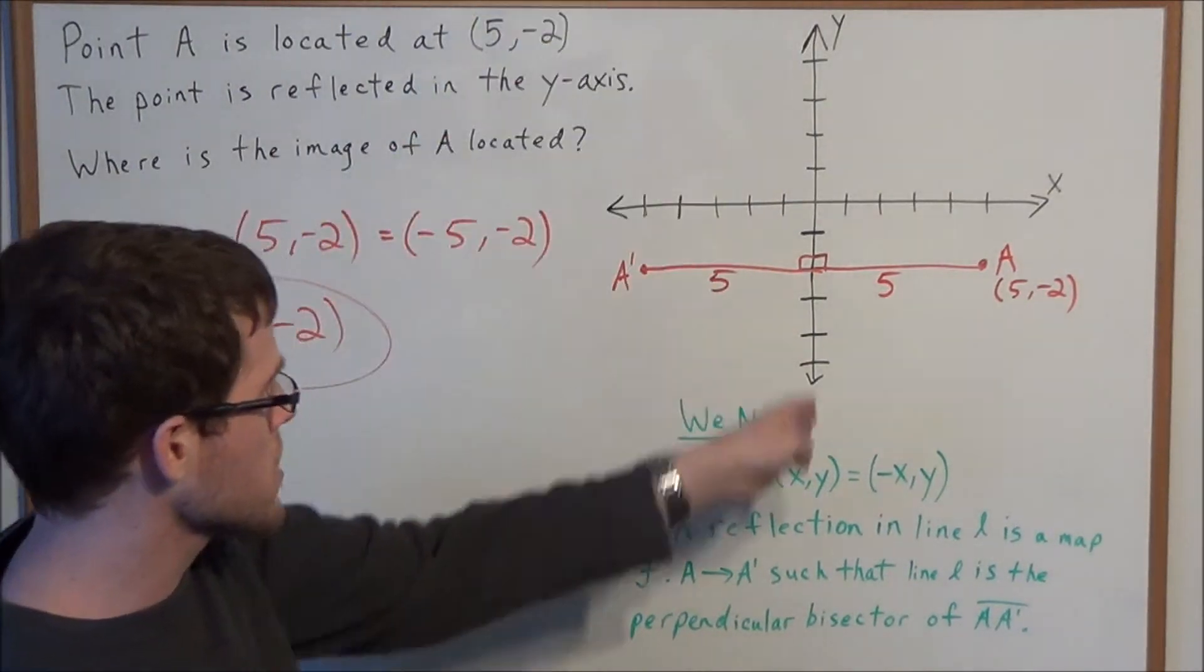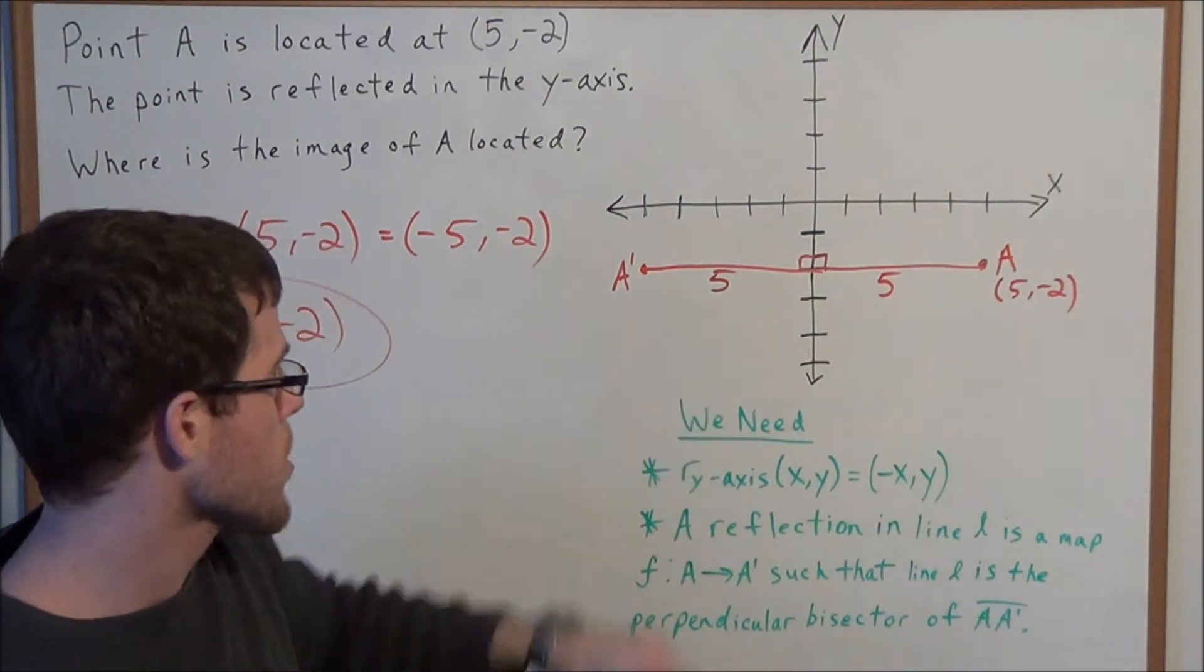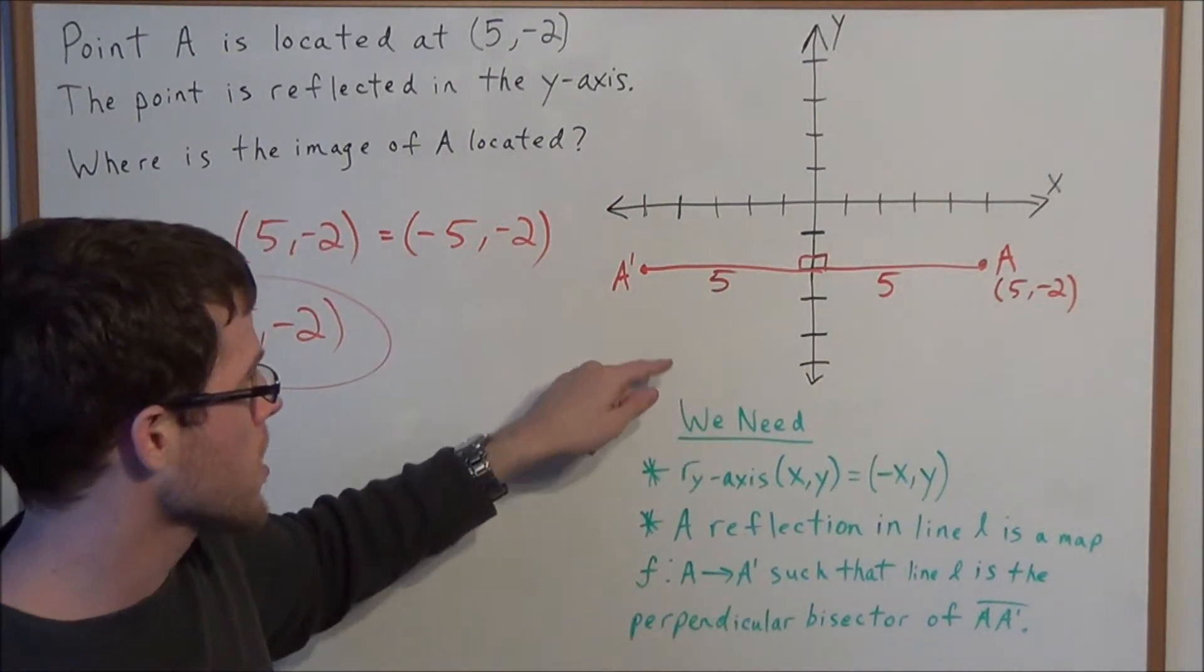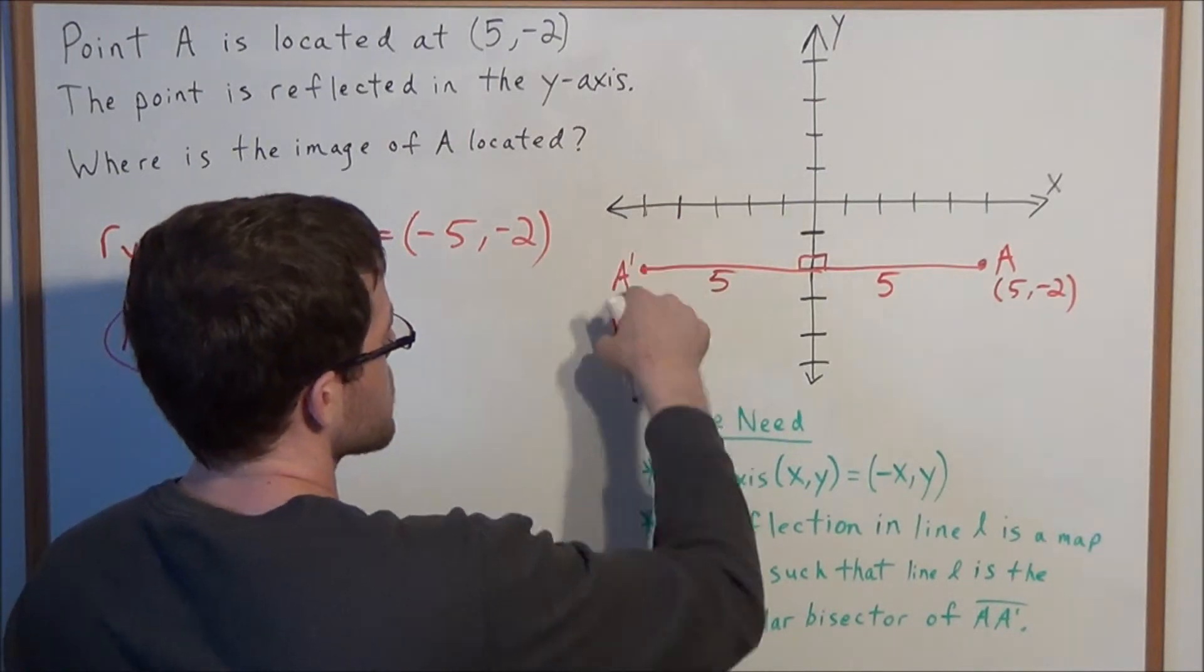So now it's clear that the y-axis is the perpendicular bisector of line segment AA prime. But now the coordinates of A prime, well, we're traveling 5 units to the left and 2 units down.